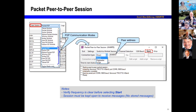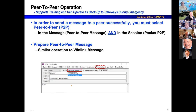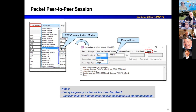A follow-up question: if transmitting to one station and trying to copy a second station on it, but the second station isn't on — what happens? From my understanding, for peer-to-peer messages you should only have one address — it's a one-to-one. You can't send a single message to more than one person; you can send two messages with the same content to two different people, but they have to be two separate messages.